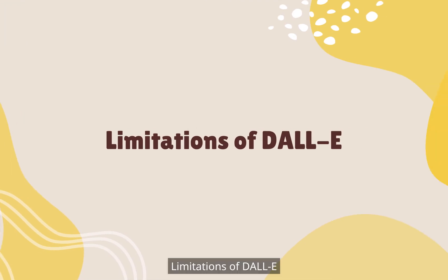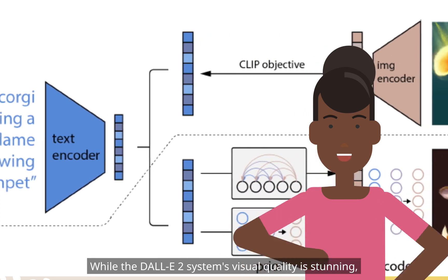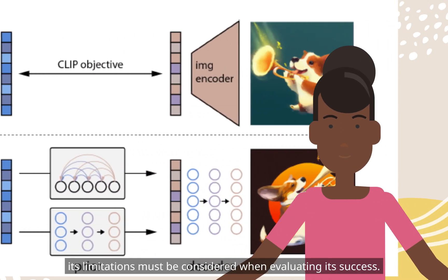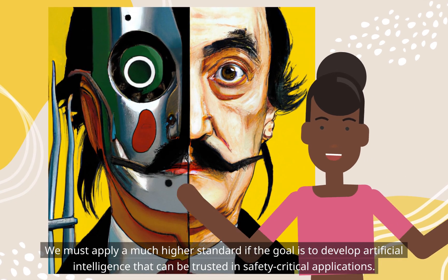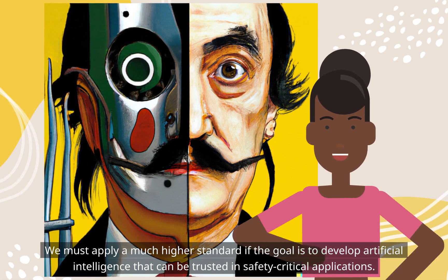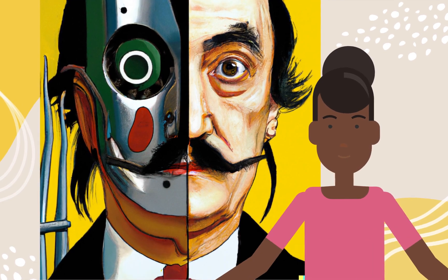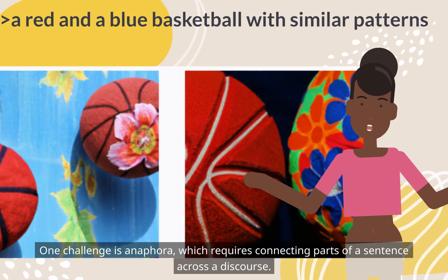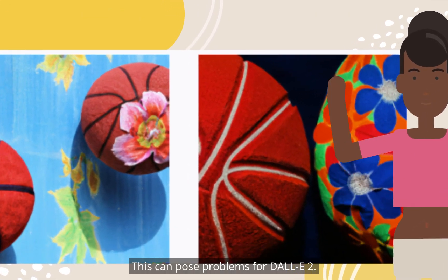While the DALL-E 2 system's visual quality is stunning, its limitations must be considered when evaluating its success. We must apply a much higher standard if the goal is to develop artificial intelligence that can be trusted in safety-critical applications. One challenge is anaphora, which requires connecting parts of a sentence across a discourse. This can pose problems for DALL-E 2.